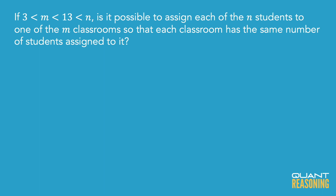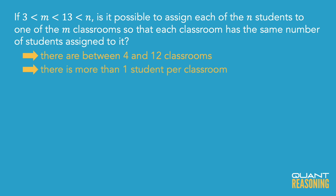We know something about the number of classrooms — it's somewhere between 4 and 12. We also know that there are more than that number of students. They're telling us that n is greater than m, so this problem is not the kind where we have to consider what if there's just one student in each classroom, or what if there are no students at all and each classroom gets assigned zero students.